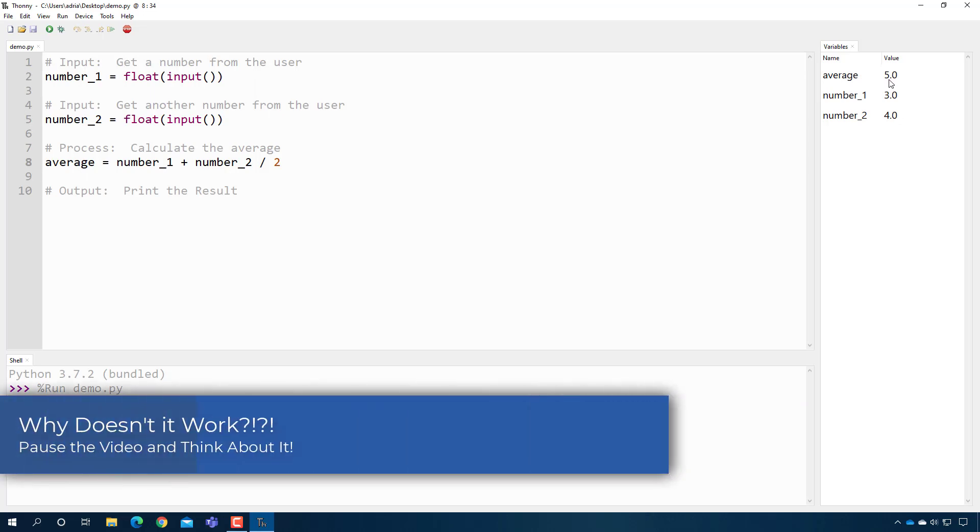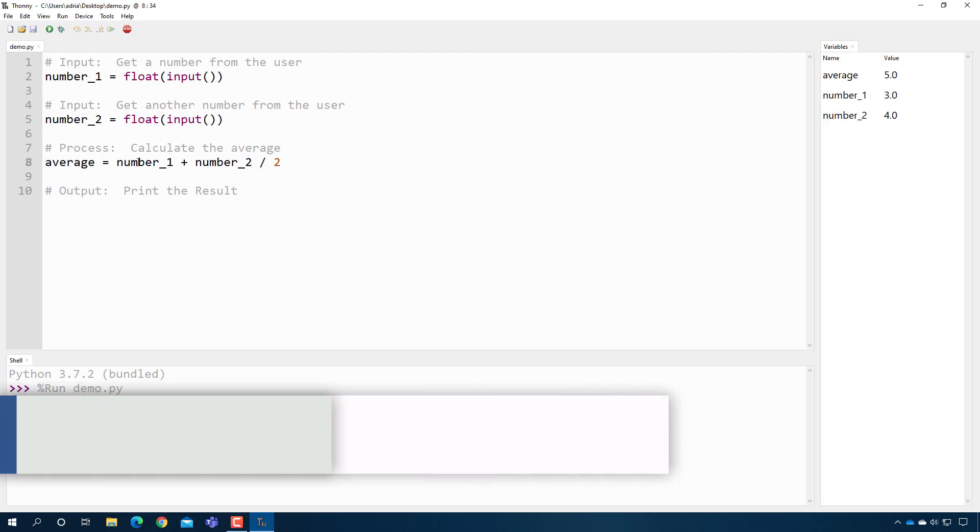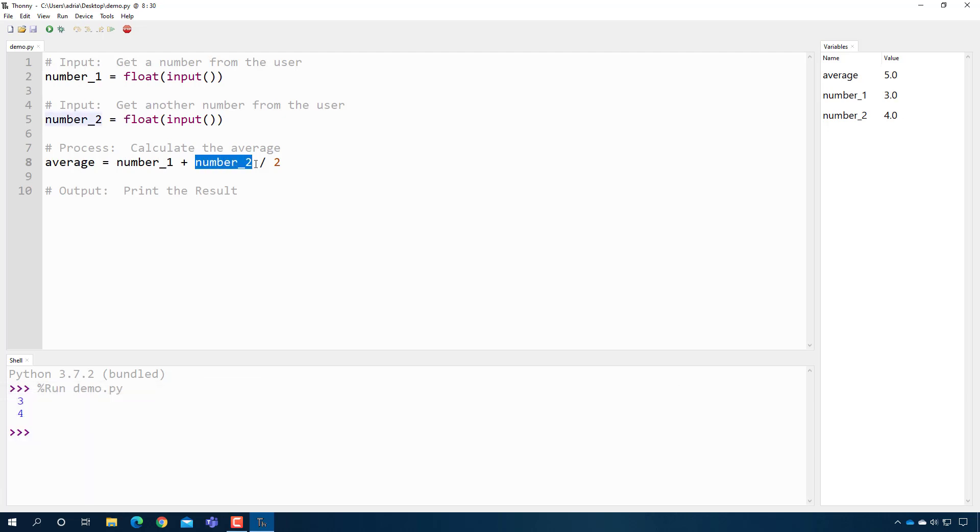And the reason for that is order of operations. You have to remember that it's exactly like you learned in school. If I set number_2 to 4, it will do this part first. So it will do 4 divided by 2, which is 2. And then it will add it to 3, which is why you get 5. So I have to use parentheses and I can use as many parentheses as I want. And here we go.